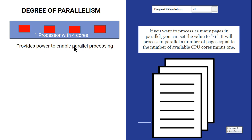Multiple cores enable parallel processing. Imagine you have a PDF document — you pass one document, but that document could have 10 pages, four pages, three pages, or even just one page. When there are multiple pages, you want all pages to be processed in parallel at the same time.